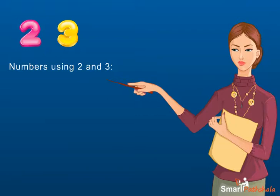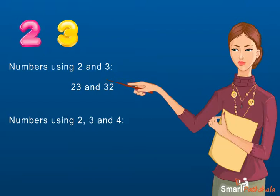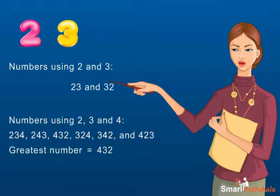Those numbers will be 23 and 32. Now consider digits 2, 3 and 4. Using these digits, we can make numbers like 234, 243, 432, 324, 342 and 423. The greatest number is 432 and the smallest number is 234.